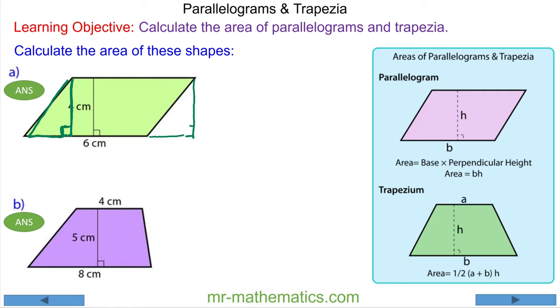This right angle becomes this right angle and this length becomes this length. What we have now is a perfect rectangle which is 6 by the same perpendicular height of 4, so it is 6 centimeters multiplied by 4 centimeters.